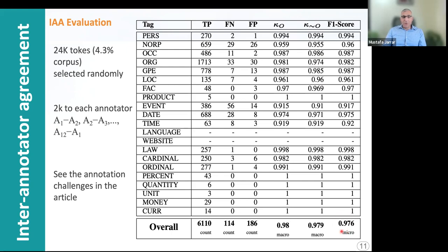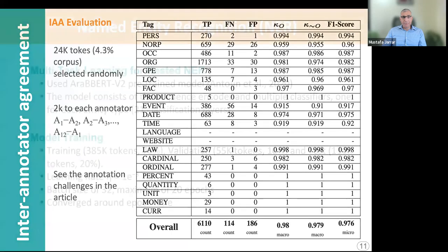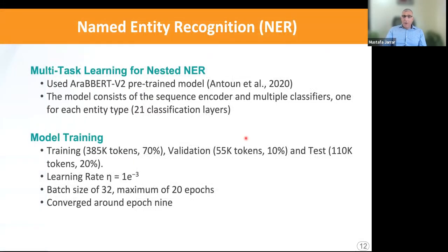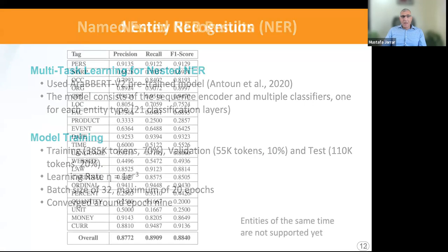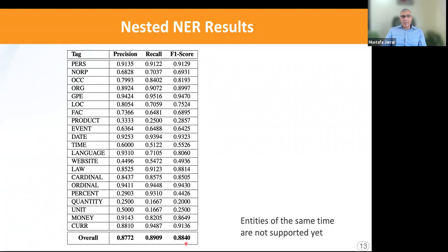Inter-annotator agreement was about 98 percent accuracy. Now for the fine-tuning: this is the only available model supporting nested entities. We fine-tuned an existing pre-trained model called AraBERT version 2, using multi-task learning. We built multiple classifiers, one for each of the 21 entity types. We divided the corpus into 70 percent training, 10 percent validation, and 20 percent for testing, achieving 88.4 percent F1 score overall.